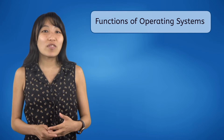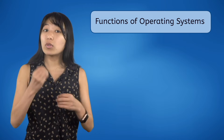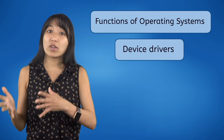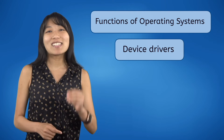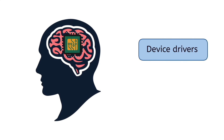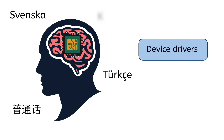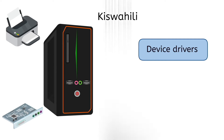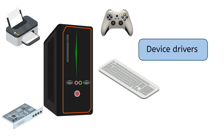Another important feature of operating systems is that they help the computer communicate with hardware devices using device drivers — software programs that automatically translate data and commands for specific devices to understand. Imagine you had a chip in your brain that allowed you to understand Swedish, Mandarin, Turkish, and Swahili, and talk to other people in those languages without having to learn them. That's what drivers do for computers, except they allow the computer to speak the languages of printers, sound cards, keyboards, game controllers, and other devices.